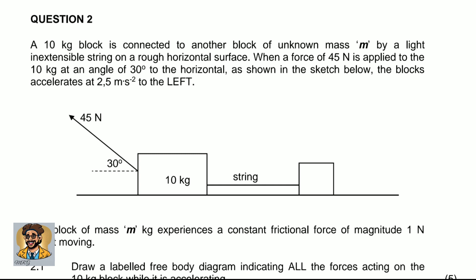This question says a 10 kilogram block is connected to another block of unknown mass M by a light inextensible string on a rough horizontal surface. When a force of 45 newtons is applied to the 10 kilogram block at an angle of 30 degrees to the horizontal, the blocks accelerate at 2.5 meters per second squared to the left. The acceleration is to the left and equal to 2.5 meters per second squared.